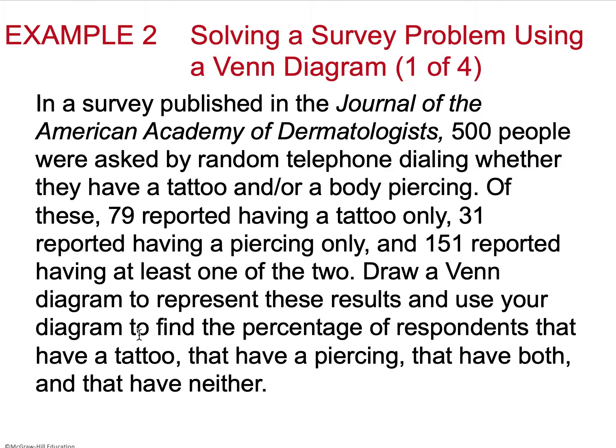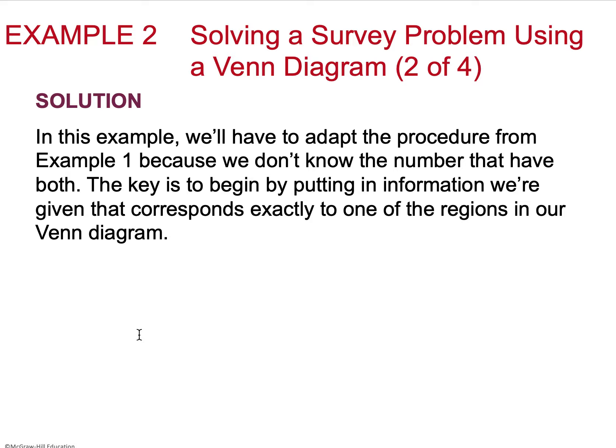So let's look at another example. In this case, we've got 500 people that we're dealing with, and we're going to random telephone dial them to find out if they have a tattoo and or a piercing. So 79 have only a tattoo, 31 have only a piercing, and 151 reported having at least one of the two. So that's not 151 have both, it's at least one of the two, which then is going to leave us to do a little bit of math.